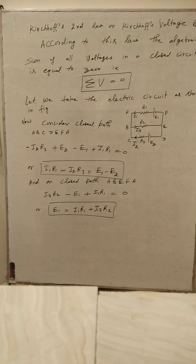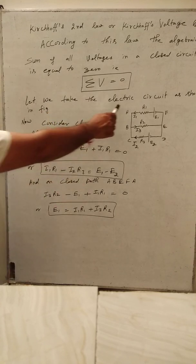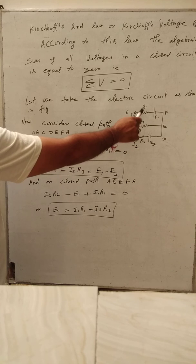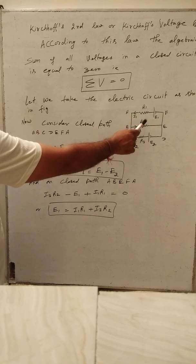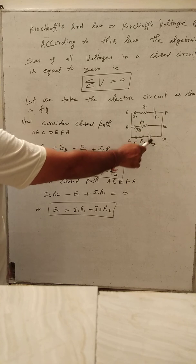That is, sum of V equal to zero. Let me describe the electric circuit as shown in the figure, in which we have three resistances R1, R2, R3 and two cells E1 and E2.